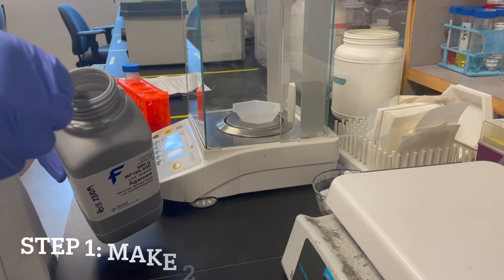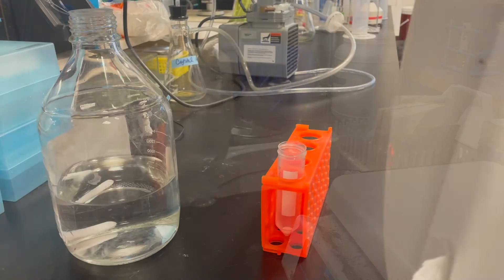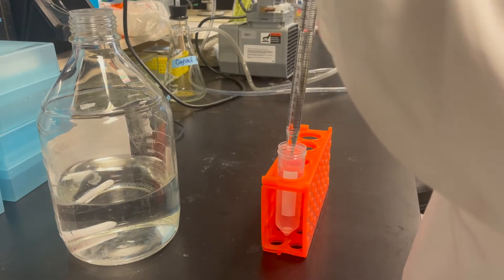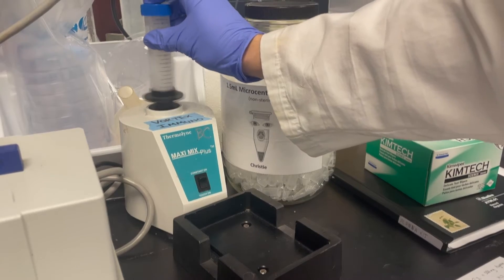Generally, the first step is making the agarose that the brain will be embedded in for sectioning. We use low melt agarose and dilute it to 2% in 1xPBS. Make sure to mix and heat in the microwave and homogenize.